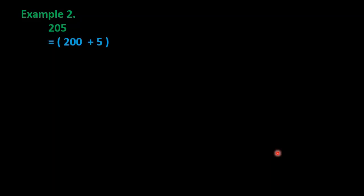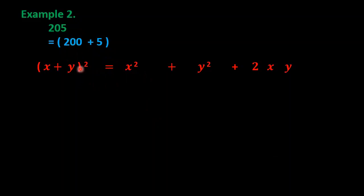Now let me do an additional example not from exercise 3.3. I have chosen the number 205. Since 205 is around 200, we split it as 200 + 5. Because of the plus sign, we use formula one: (x + y)² = x² + y² + 2xy, where x = 200 and y = 5.